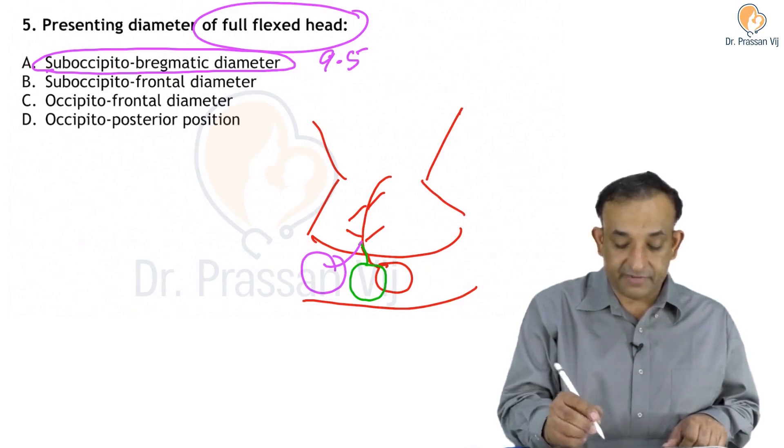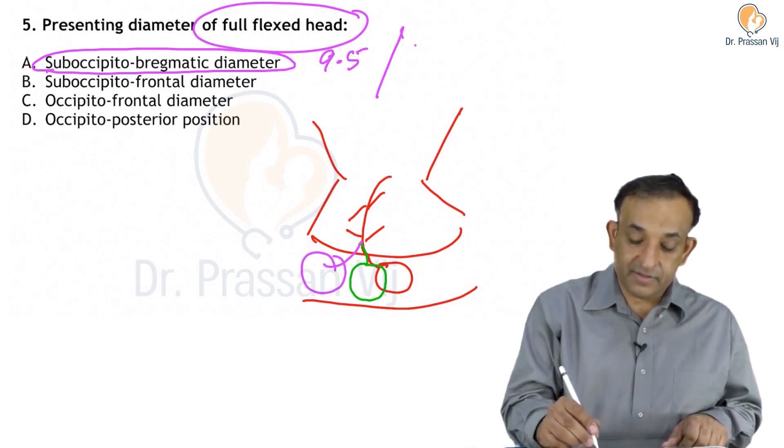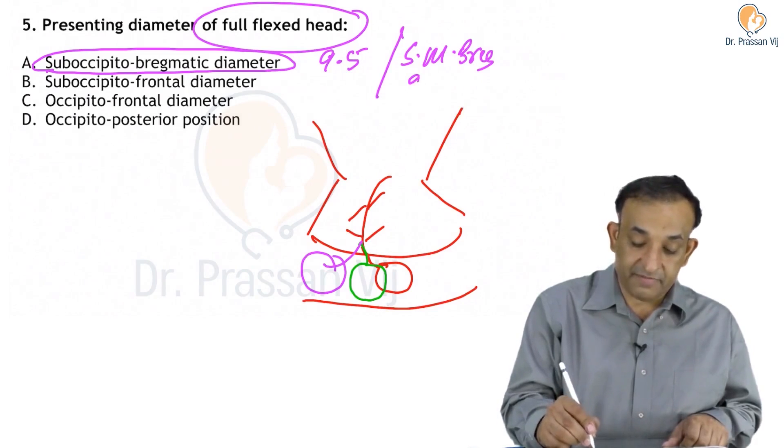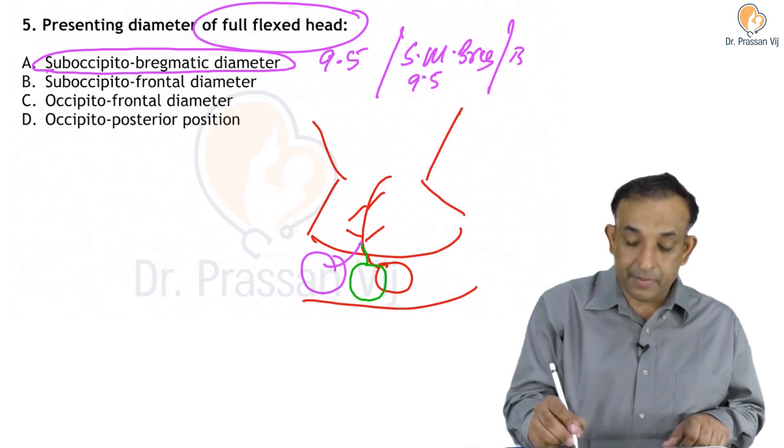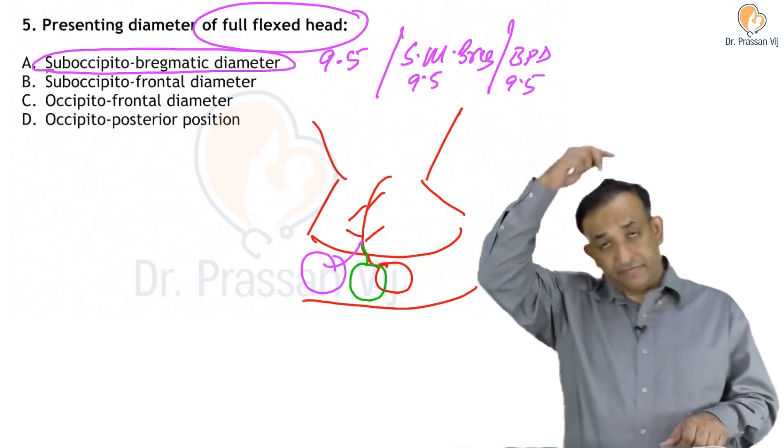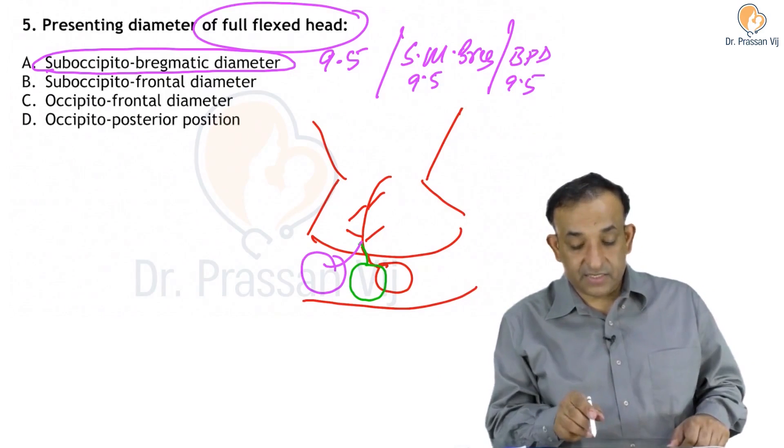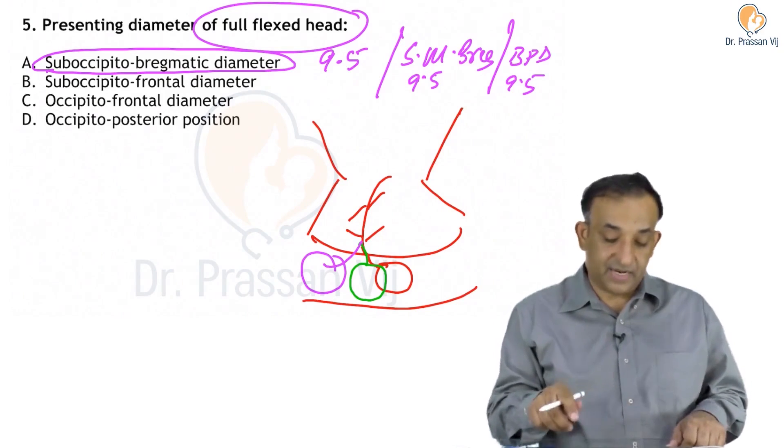This is 9.5 - what else is 9.5? Submentobregmatic is also 9.5 and the biparietal diameter is 9.5. So three diameters of the fetal head are 9.5: suboccipitobregmatic, submentobregmatic, and biparietal diameter.